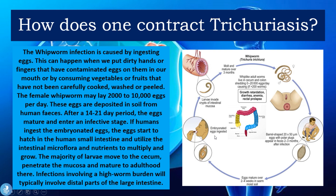Looking at the life cycle diagram, first we have the embryonated eggs which are ingested, followed by invasion of the intestine where larvae invade the crypts. The egg hatches in the human small intestine, utilizing intestinal microflora and nutrients to multiply and grow. The larvae then move into the cecum — the first part of the large intestine — penetrate the mucosa, and mature into adulthood. Adult whipworms live in the cecum and colon and shed approximately 20,000 eggs per day, causing more than 200 worms to develop.